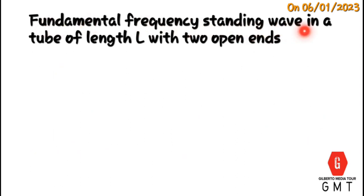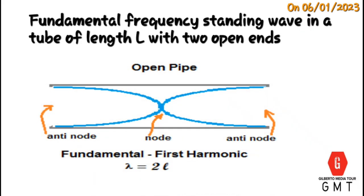Fundamental frequency of standing waves in a tube of length L with two open ends. This is what we call fundamental frequency. As we said, fundamental frequency is the lowest frequency for a tube which is open at both ends. We will have antinode and antinode for open ends. This is what we call fundamental frequency for a tube which is open at both ends, or is known as first harmonic.